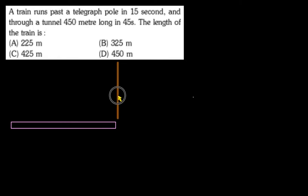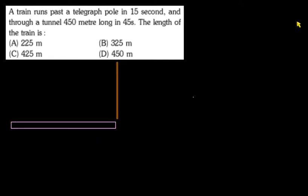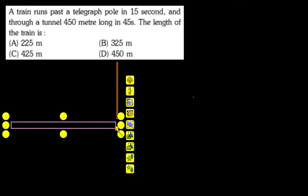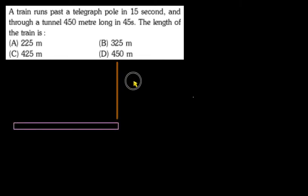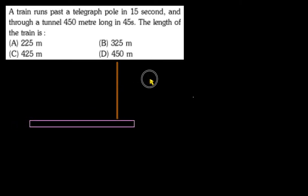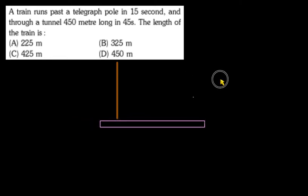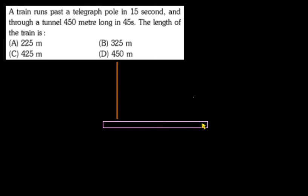This is the train. When the train length is L, look at it — this is the train. When the pole crosses one part of the train — the front or the back part of the train — let's try to understand it. It's easy to understand.